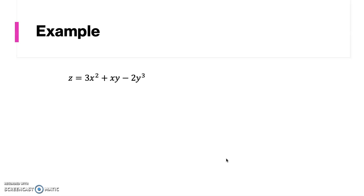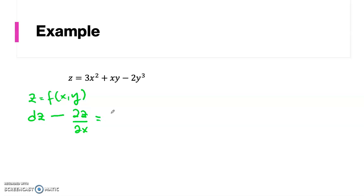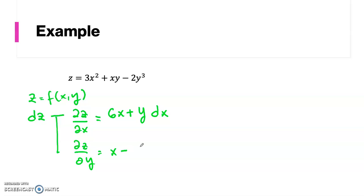We have z as a function of x and y. So what we're looking for is dz. To get dz, we first find the partial derivative of z with respect to x: ∂z/∂x equals (6x + y)dx. And ∂z/∂y is equal to (x − 6y²)dy.